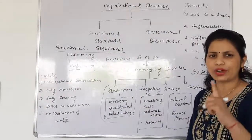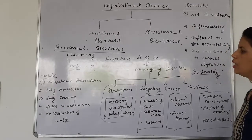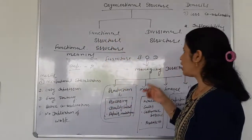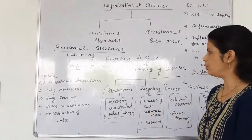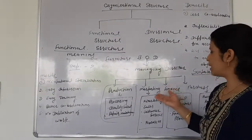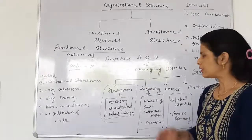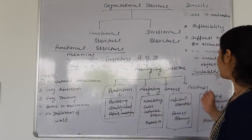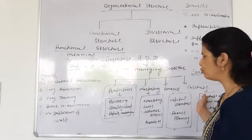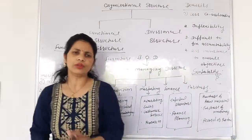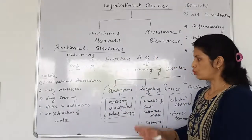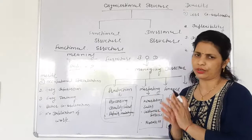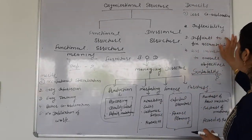It is difficult to fix accountability. If the organizational goals are not being achieved, we can't hold any one department accountable because marketing will blame production for not selling, and production will blame others for not providing good products. Since all departments are interdependent on each other, it is very difficult to fix the accountability of any one department.